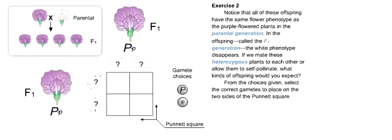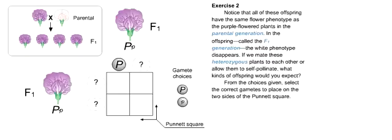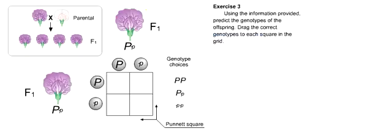If we mate these heterozygous plants to each other, or allow them to self-pollinate, what kinds of offspring would you expect? From the choices given, select the correct gametes to place on the two sides of the Punnett square. Using the information provided, predict the genotypes of the offspring. Drag the correct genotypes to each square in the grid.